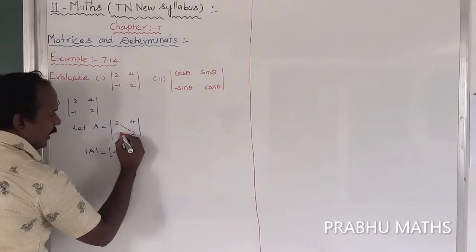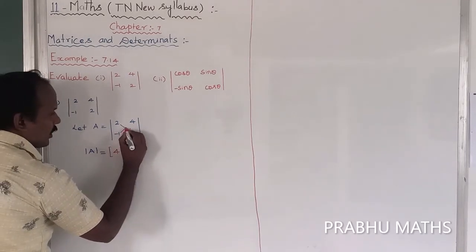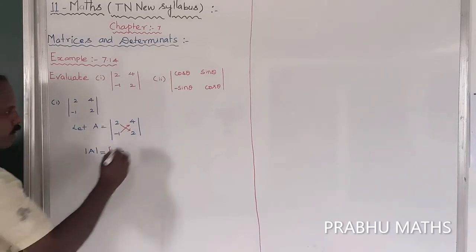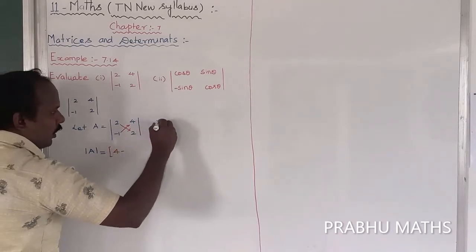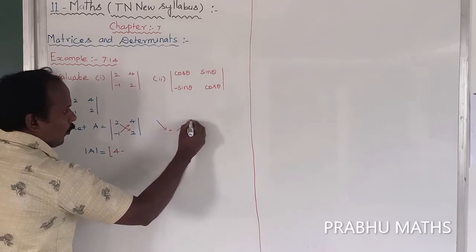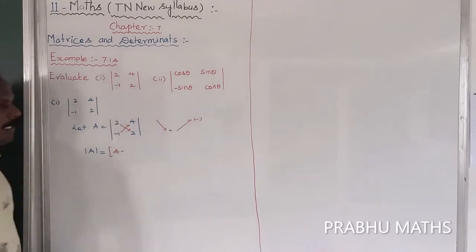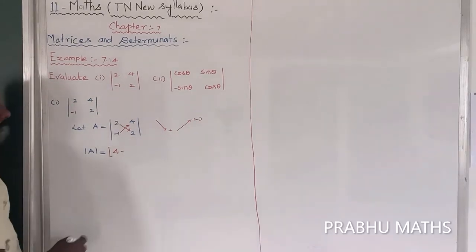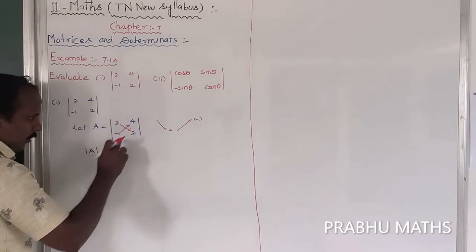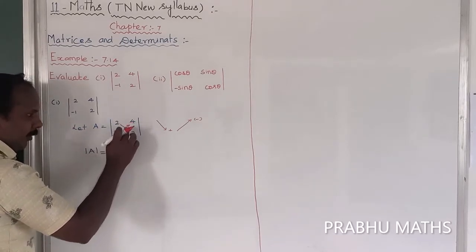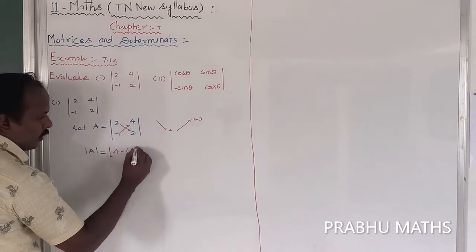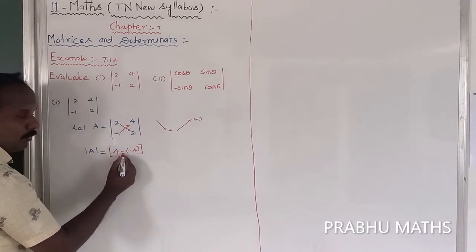Next, the second diagonal: that is the second diagonal, and this multiplication is put in minus. The downward diagonal is always going to plus, and the upward diagonal is always going to minus. That is the determinant multiplication formula. So the first diagonal multiplication is 4, and the second diagonal multiplication is minus 4.